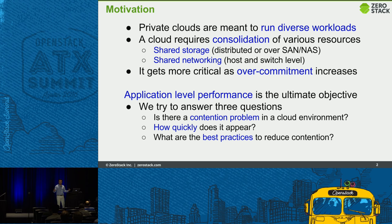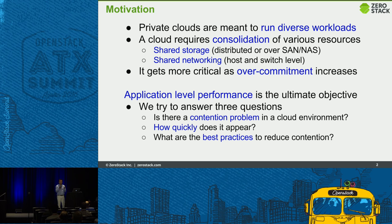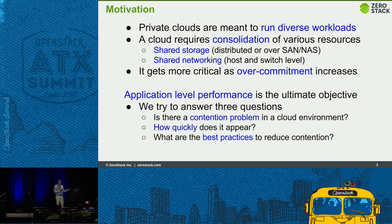In terms of storage and networking, we feel that the overall sharing is much more critical compared to CPU and memory, because they are at least host-bound. If you do over-commitment on a host, it's not going to impact other hosts in the cluster. But in case of storage, it's in many cases shared across all machines — something on one host can impact storage performance. Similarly, in networking, it's very hard to isolate network performance from one VM to another, including the physical networking in the data center.